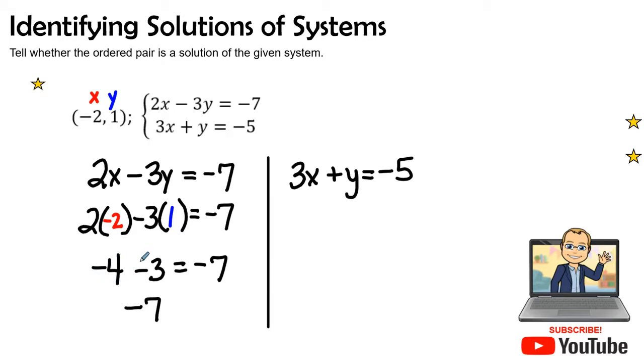Does -4 and -3 equal -7? The answer is yes, because I have four negatives here and three negatives, and when I combine that together I have seven negatives, so it's -7. Therefore, yes, this is a solution.